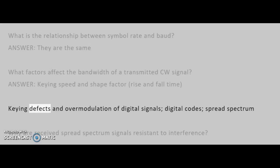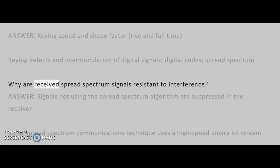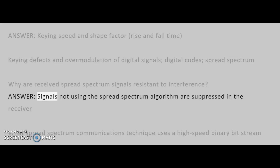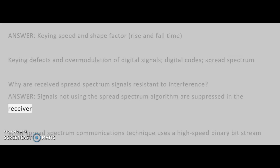Keying defects and overmodulation of digital signals, digital codes, spread spectrum. Why are received spread spectrum signals resistant to interference? Answer: Signals not using the spread spectrum algorithm are suppressed in the receiver.